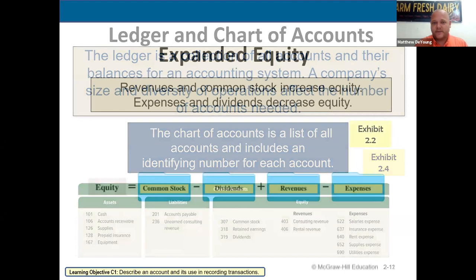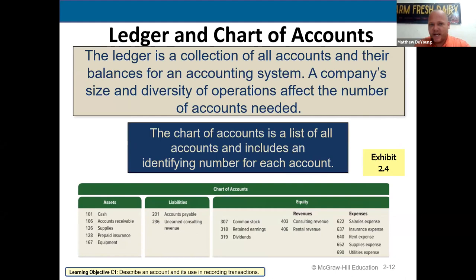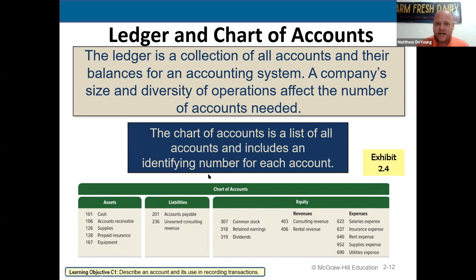A chart of accounts is a list of all the separate files you'd need to keep track of to understand your business. Think of it as your filing cabinet. Inside that filing cabinet are folders: folder 101 is the cash folder that tracks every movement with cash, folder 106 is accounts receivable and keeps track of all the people that owe us money. These are all mini-folders within the great filing cabinet called the chart of accounts.